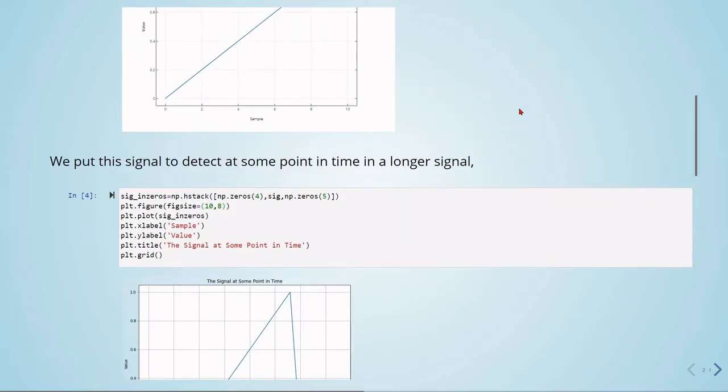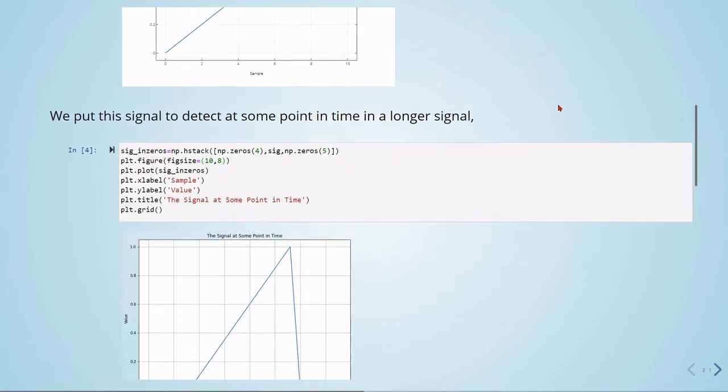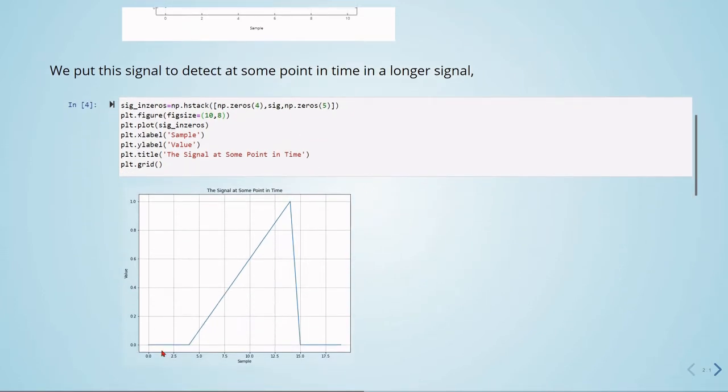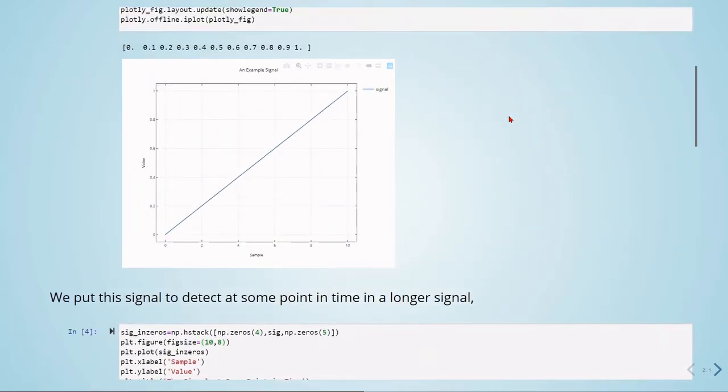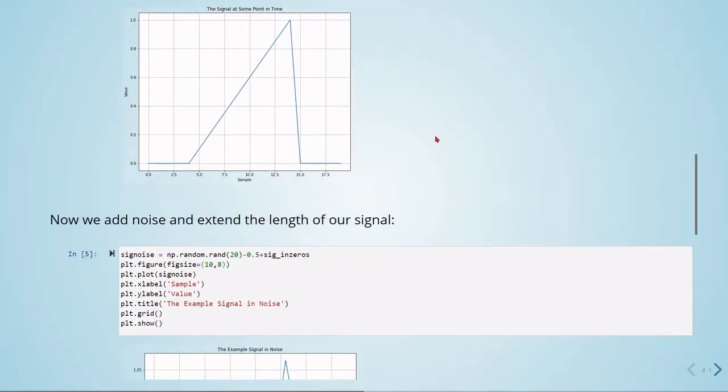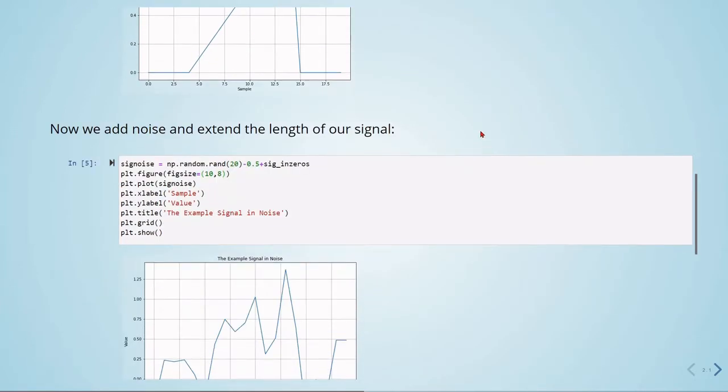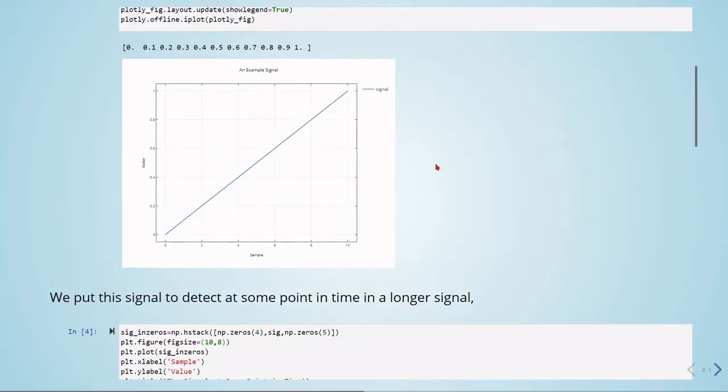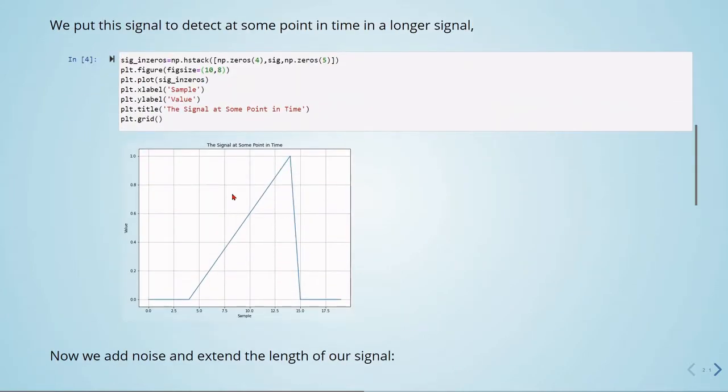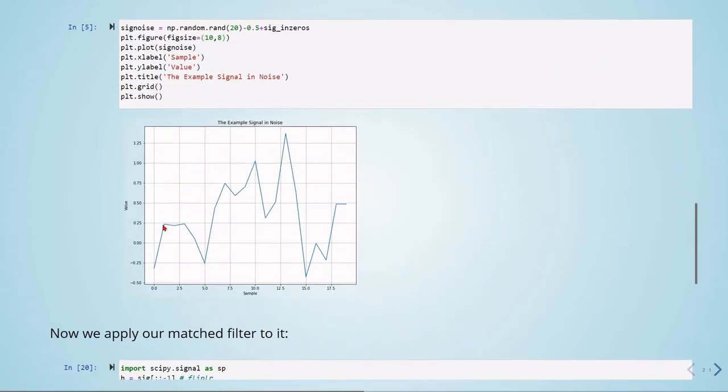So now we will put this signal to detect at some point in time inside a longer signal. So this is what we are doing here. Now we have our signal to detect inside this longer signal here. And then we will add noise. So this is the original signal and this is with noise.